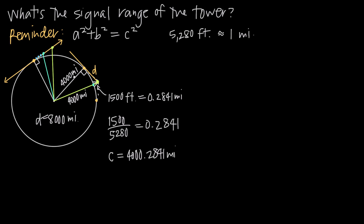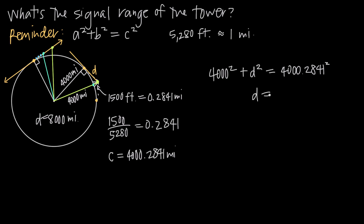Using the Pythagorean theorem: A squared plus D squared equals C squared. We plug in 4,000 for A and 4,000.2841 for C. So 4,000 squared gives us 16 million, and 4,000.2841 squared gives us 16 million and change. We subtract 16 million from that value and take the square root, giving us D is approximately equal to 47.67 miles — that's the signal range of the tower.